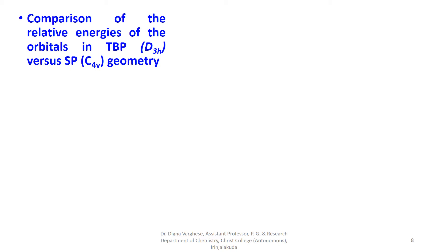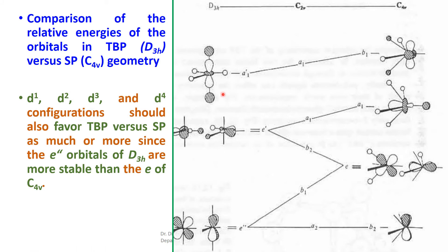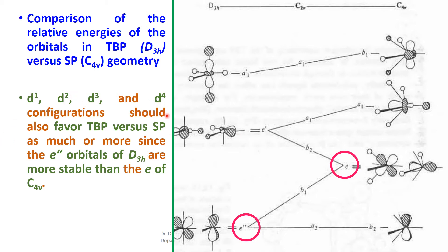Looking at the relative energies of d-orbitals in TBP (D3h) versus square pyramidal (C4v) geometry from the energy level diagram: d1, d2, d3, and d4 configurations should favor TBP over SP, since the e″ orbitals of D3h are more stable than the e orbitals of C4v.